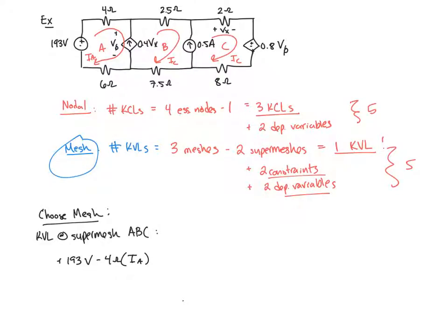Then jumping over to mesh 2, I go through the 2.5 ohm resistor times current IB. Sorry, there's a typo right here, IB. Okay, moving into mesh C, we have minus 2 ohms times mesh current IC, minus the voltage dropped across the dependent source, which is 0.8 V naught, minus 8 ohms times mesh current IC. Moving back into mesh B, minus 7.5 ohms times mesh current IB. And back into mesh A, minus 6 ohms times mesh current IA, all equal to 0. So one long equation for supermesh A, B, and C.